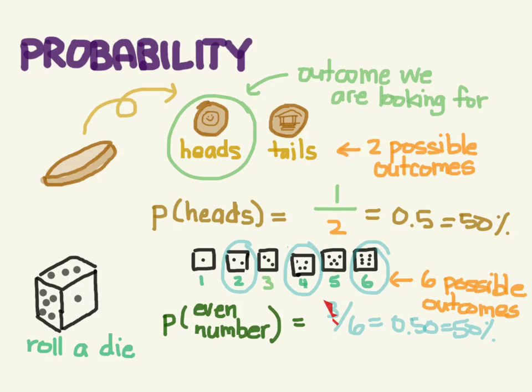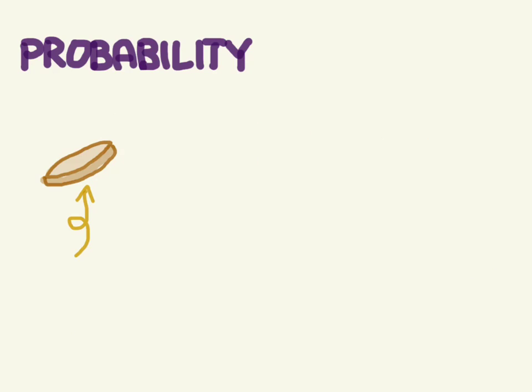So again remember what we do is we put in the numerator the number of ways we can get the outcome we want, and in the denominator we put all possible outcomes.